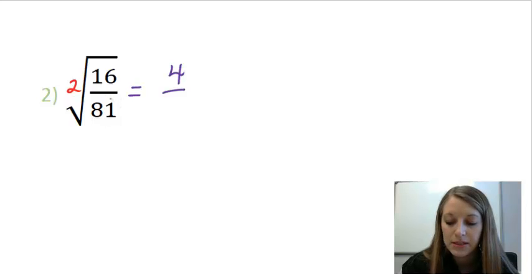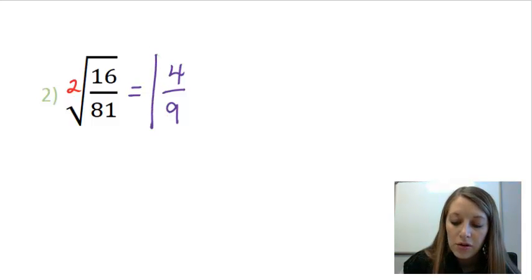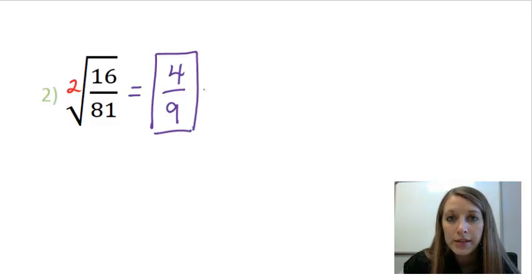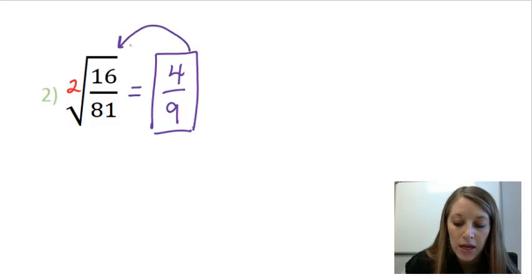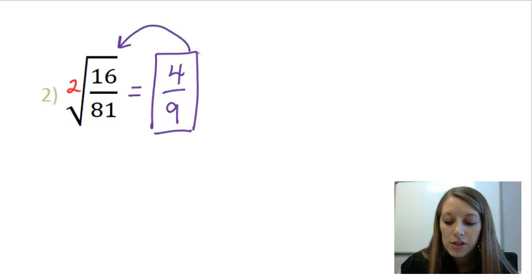In the bottom, I take something times itself two times to give me 81, and that gives me nine. So, if you don't trust yourself, you can always double-check this by squaring it and going backwards. Four squared, or four times four, gives me 16, and nine squared, or nine times nine, gives me 81.